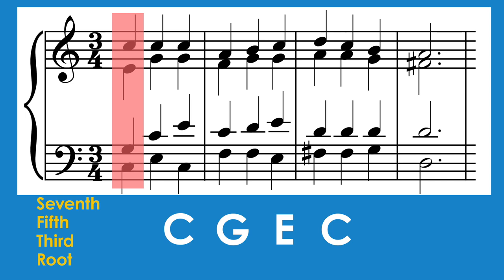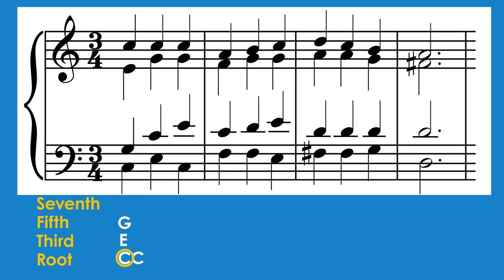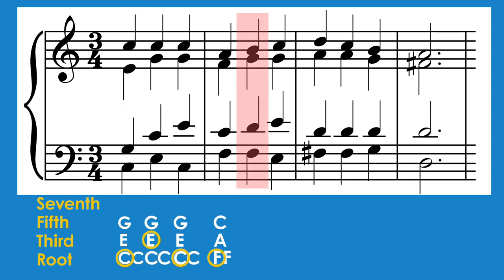If we stack those up in thirds, then we have C in the root, E in the third, and G in the fifth. Since there are two Cs in this chord, we will write another C in the root row. One more thing we can do is circle the note that's in the bass — this will help us identify if the chord is in root position or if it's an inversion. For the first chord, C is in the bass, so we'll circle one of the Cs. We can continue this analysis, but when we get to the second beat of the second bar, we see our first seventh chord.